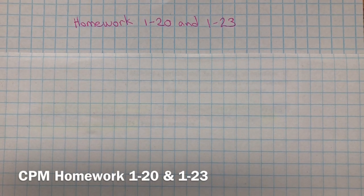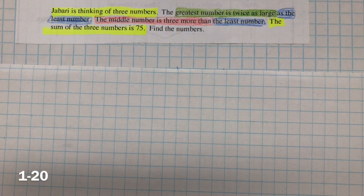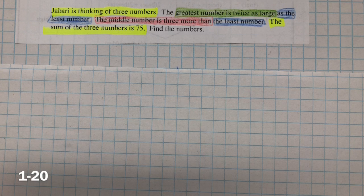This is the homework for 120 and 123. For 120, Jabari is thinking of three numbers. We don't know these three numbers, but the greatest number is twice as large as the least number. The middle number is three more than the least number. The sum of the three numbers is 75, so we need to find the numbers.